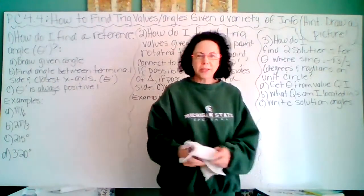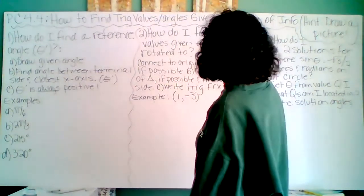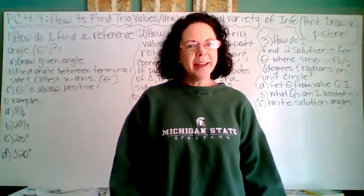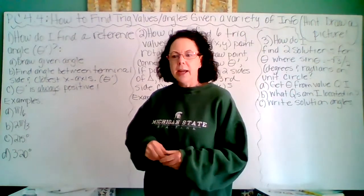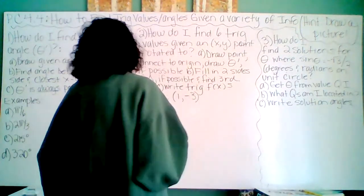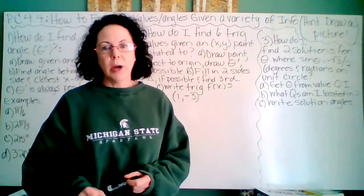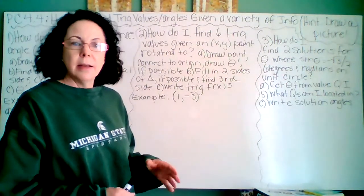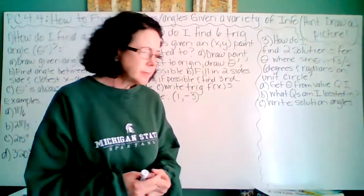Hi, pre-calculus students. Welcome to section 4.4. There will be two videos because there's lots of examples and I can't fit it all on one board — I'd have to write small and you wouldn't be able to read it. So here's video A, and video B will start with example four. There's a lot going on in 4.4, so I do a lot of examples so that you don't come across something you haven't seen. We are going to look at how do we find trig values or angles given a variety of information. You definitely want to take notes thoroughly on these two videos so every time you come across a new question with new information, you know what to do. My hint is I always draw a picture for everyone.